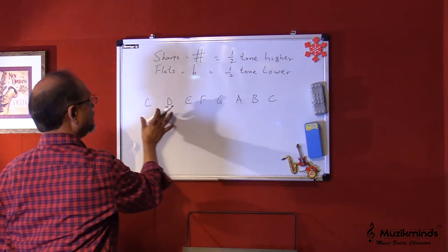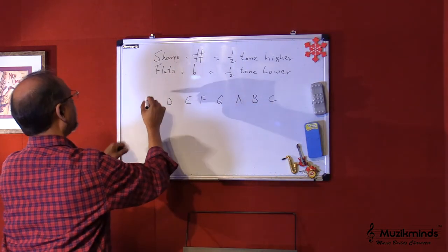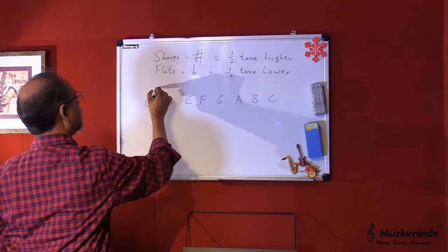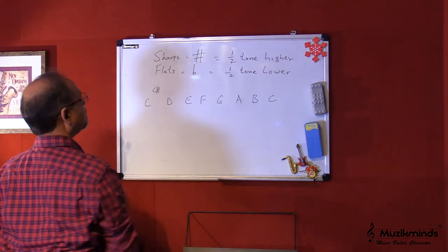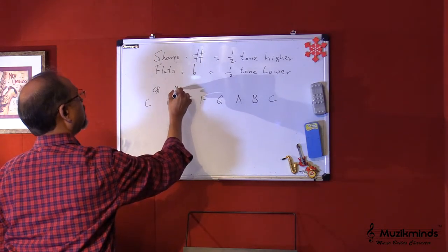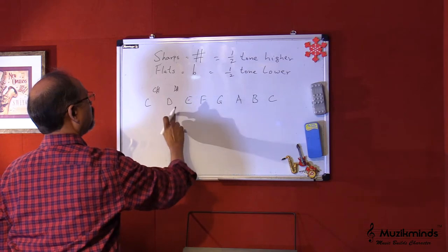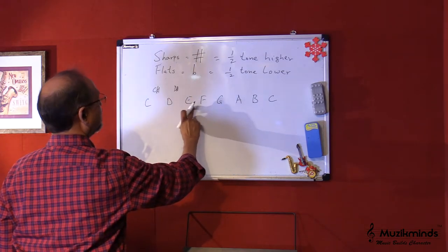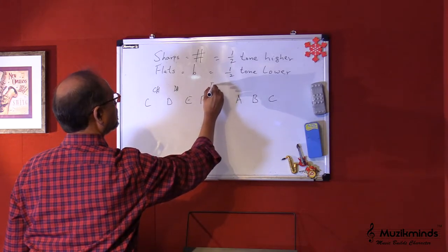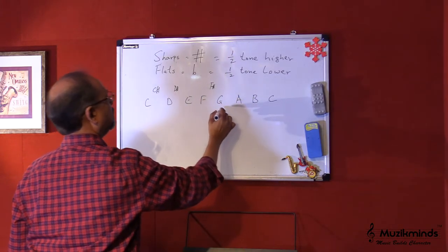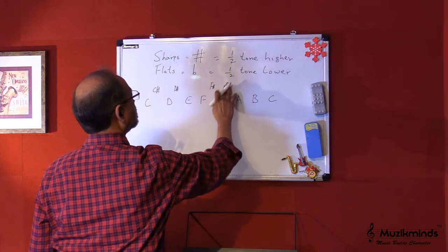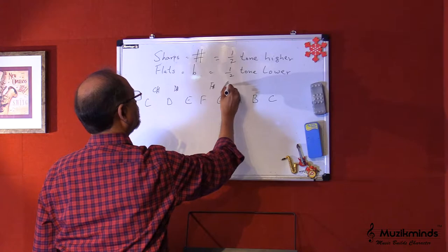In between these notes there are what is known as half tones, which are a sharp. Here there is a C sharp. This is a D sharp, which is again half a tone. Between F and G there is a half tone here, so we go F sharp. Between G and A there is a half tone again, so this is a G sharp.